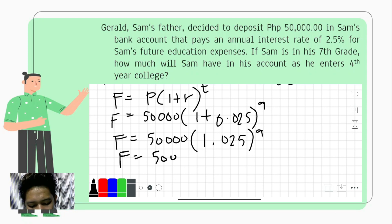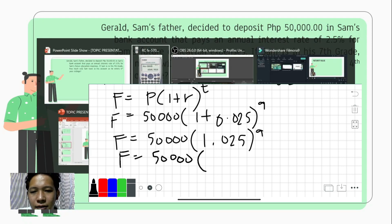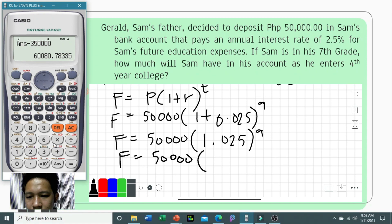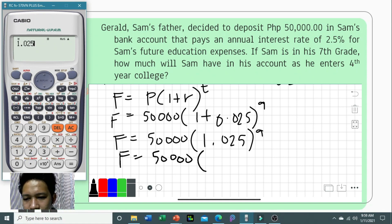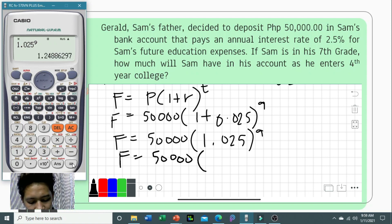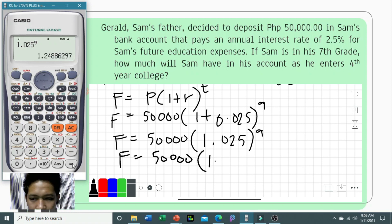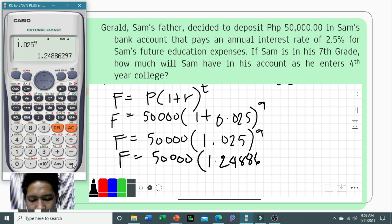Computing 1.025 raised to 9 gives 1.24886297. Multiplying by 50,000: